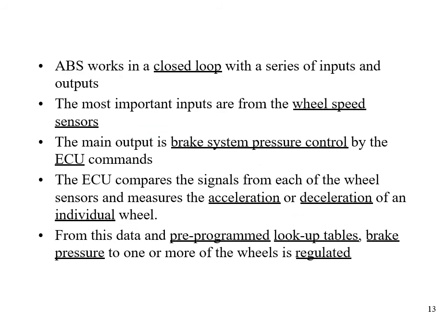ABS works in a closed loop with a series of inputs and outputs. The most important inputs are from the wheel speed sensors; the main output is brake system pressure controlled by ECU commands. ABS applies logic and puts the brakes in a cyclic manner to control braking. The ECU compares signals from each wheel sensor and measures the acceleration or deceleration of each individual wheel. It collects information from wheel speed sensors and brake pressure control commands to determine whether a wheel is going to get locked.